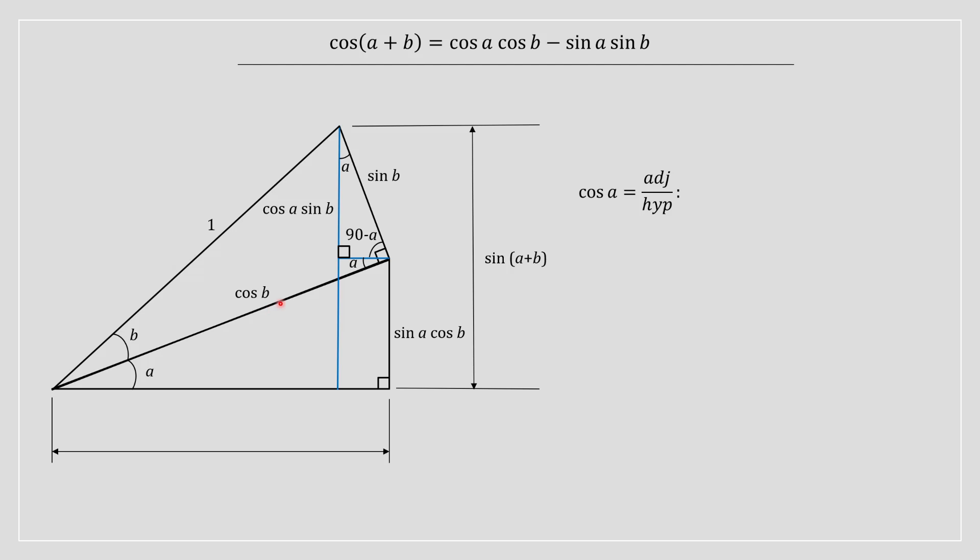The hypotenuse in this case is cos of B. We're going to replace that and solve for our adjacent side. And we have found it to be cos of A cos of B. So that's basically going to be here. So we found this side.